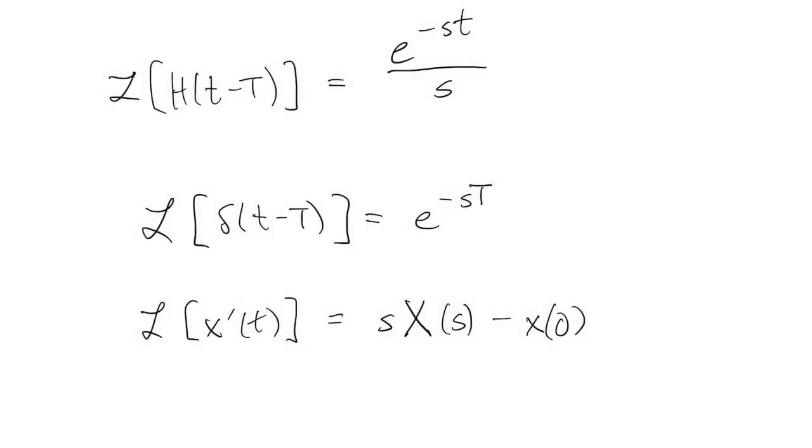One little sidebar, if you look at the transforms of h and delta, it's clear that the transform of delta is s times the transform of h, which is what happens when we take a derivative. So it looks like the delta function is the derivative of a unit step function. And in a sense that's true, although not in the usual way we talk about derivatives.